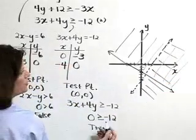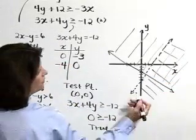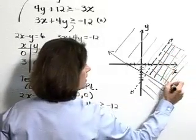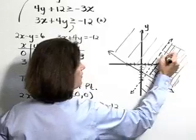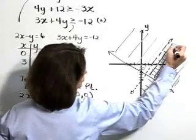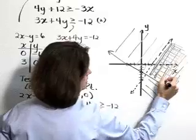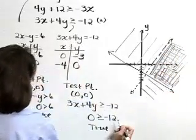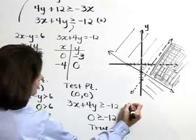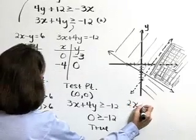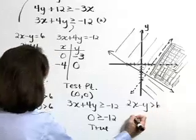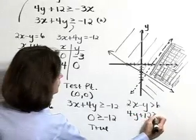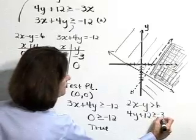As the solution to the system of inequalities, the solution region includes the area covered by both inequality solutions — the area of intersection of the shading. Shade this overlapping area darker so we can clearly identify the solution region. This is the solution region for the system: 2x minus y is greater than 6, and 4y plus 12 is greater than or equal to negative 3x.